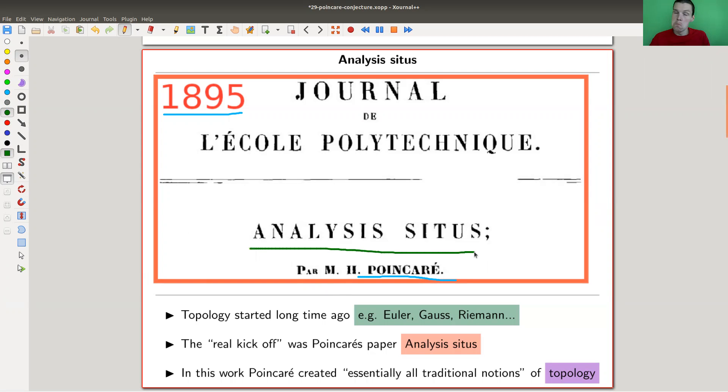Topology was, before Poincaré, called 'Analysis Situs'. That was the old name for topology - whether that's a better name or not is not important, but that was the name. This paper is essentially called 'Topology'.